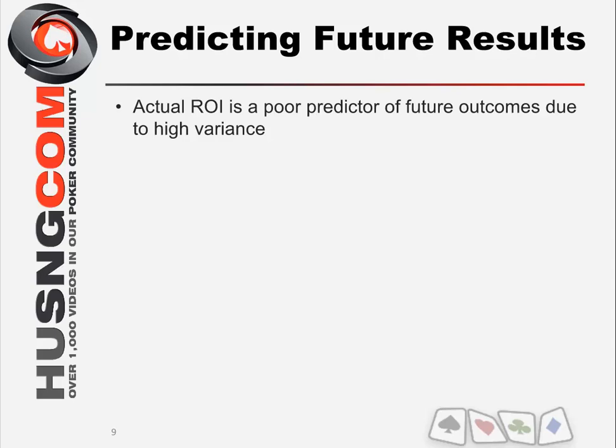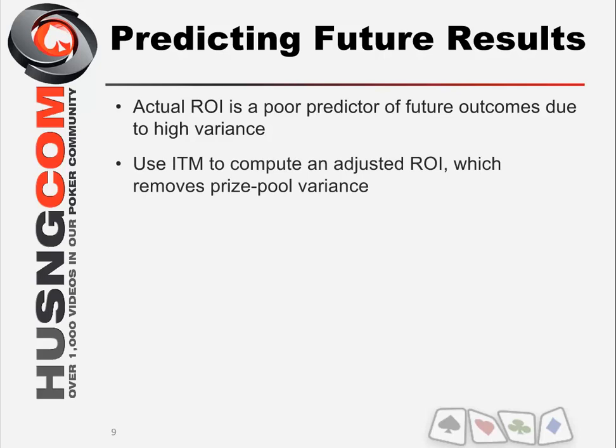You'll see a huge hourly on that day, but that doesn't mean you're going to be winning at that ROI the rest of the time — that was short-term variance. So being able to predict your future outcome using your current results is really important. There are a couple of ways to deal with this and make the best estimator you can based on your previous results. The first is to focus on In The Money.